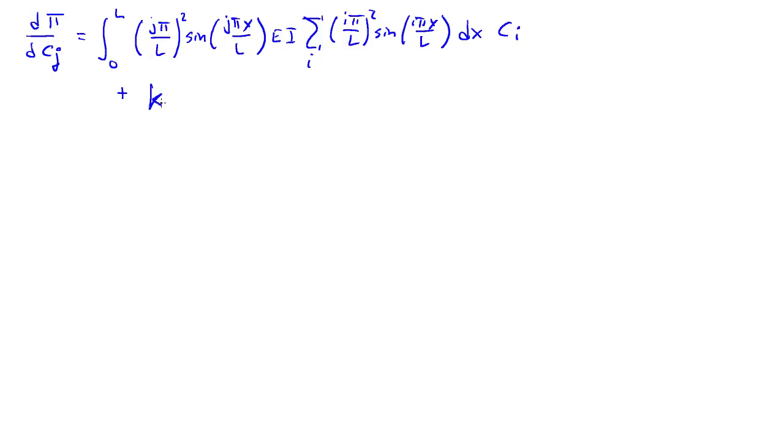Plus from the first spring, K sine J pi over 4 times the sum over I of sine I pi over 4 CI. Then from the second spring, plus K sine J 3 pi over 4 times the sum over I of sine I 3 pi over 4 CI.